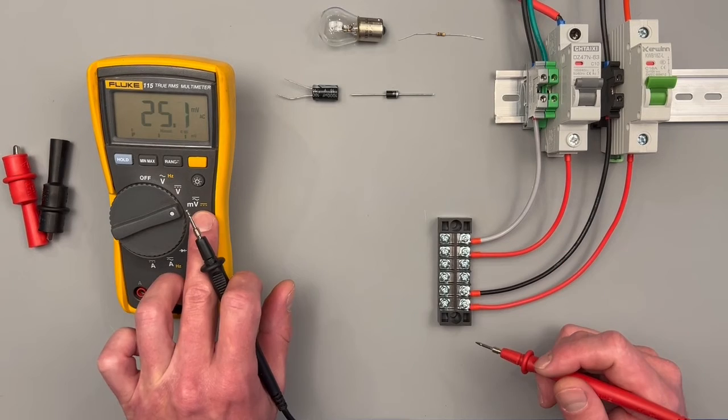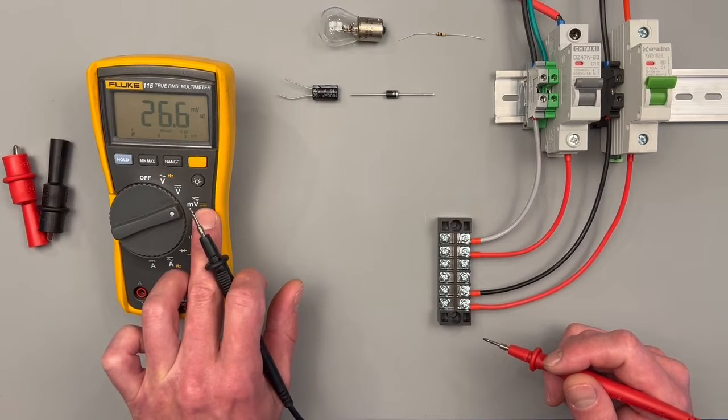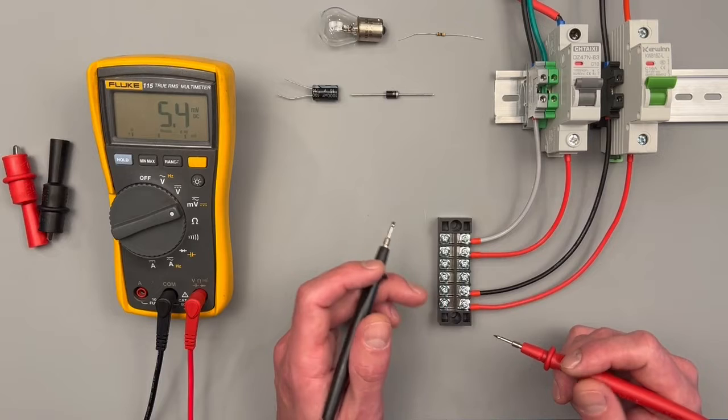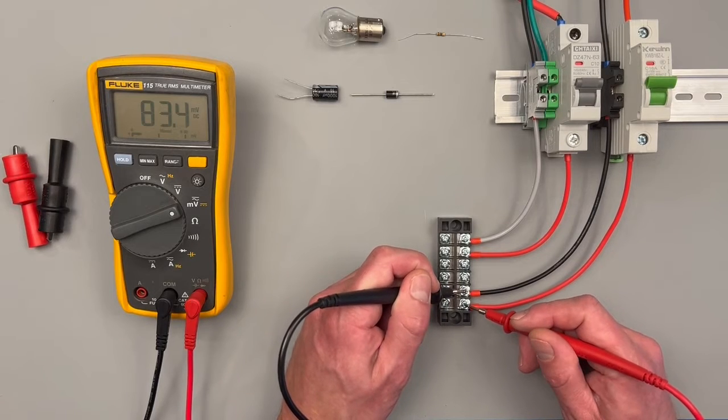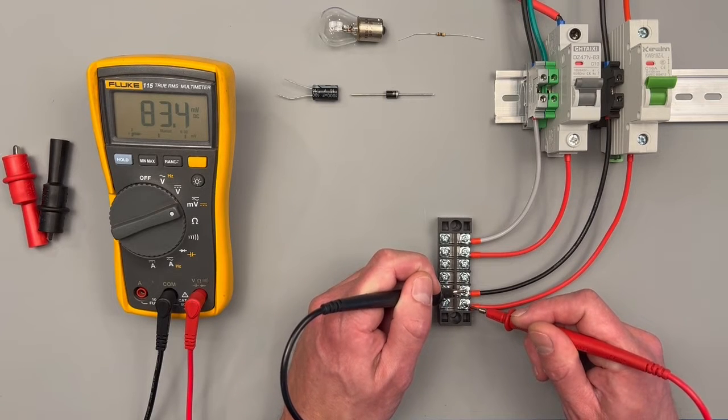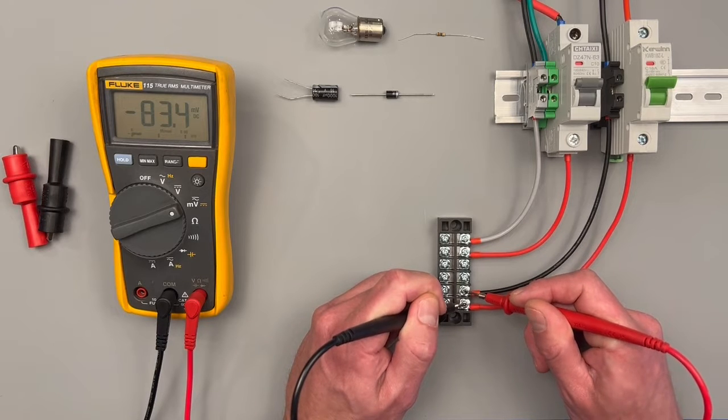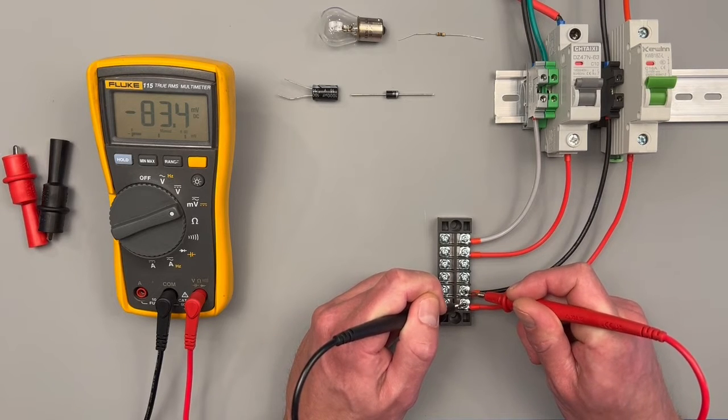Next is for millivolts AC and DC. I don't have a good way to demonstrate the millivolt AC reading. Our millivolts DC is in yellow, so I'll go ahead and hit the yellow button and then I can make a millivolt reading. I'm reading 83 millivolts DC.